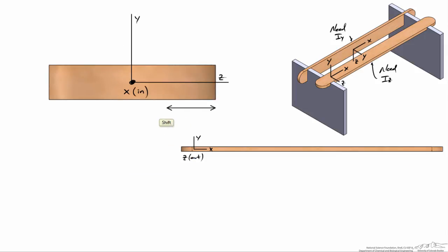Let's add a couple of dimensions for our rectangle. We'll use the variable b for the horizontal view, and for the vertical view we'll use the variable h. By symmetry the centroid runs straight down the middle of the rectangle, and this distance is h over 2, and this distance is b over 2.